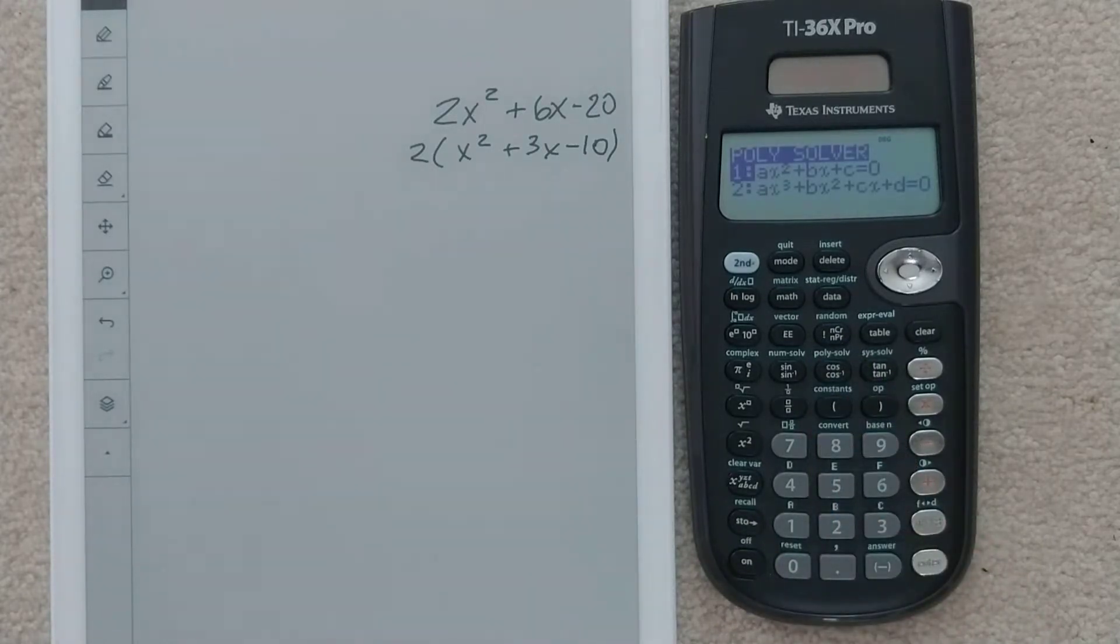We want to pick the first option, which is the ax squared plus bx plus c equals 0.